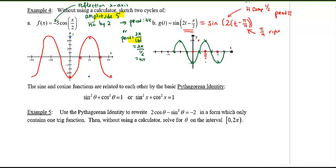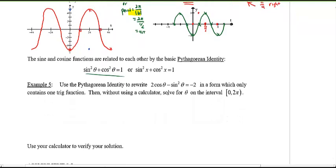We learned Pythagorean identities and double angle identities in precalculus, which will come in handy in calculus. The most commonly used identity: sine²θ + cos²θ = 1. We want to rewrite an equation containing only one trig ratio — it's much easier to solve algebraically that way. Keep cosine by substituting sine²θ = 1 − cos²θ.